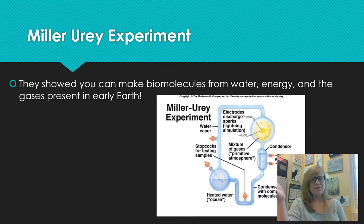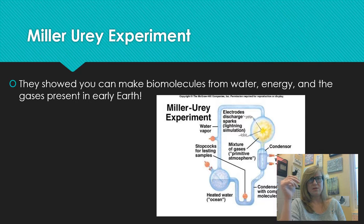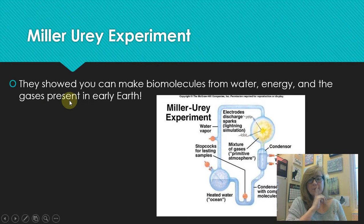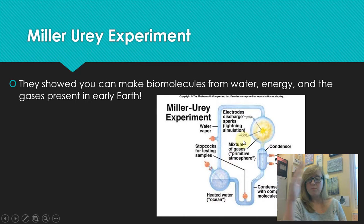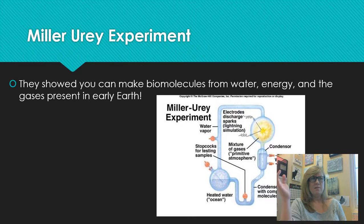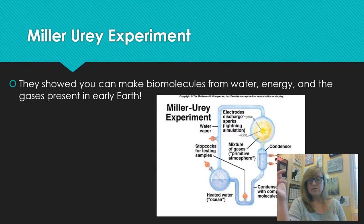But nobody could figure out how to prove anything like that - how are you going to test this? We can't go back 4.6 billion years. So Miller came up with an idea: he made this glass apparatus and added water, did a water cycle by heating the water, letting it evaporate, cool, condense, and rain back out. Then he added the gases present in the early atmosphere - things like methane, hydrogen, and maybe carbon monoxide.